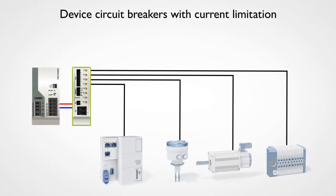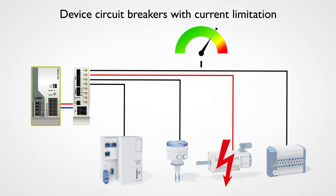Device circuit breakers with built-in current limitation ensure that, even in the event of a short circuit, the current in the protected branch does not exceed a specific value. This reduces the load on the power supply, thereby preventing a voltage drop. The controller does not have to bridge any downtimes and the system continues running without any errors.